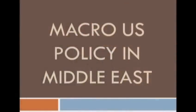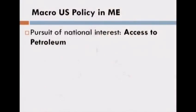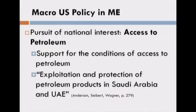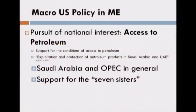Let's introduce some macro policy in the Middle East relative to the United States. Relative to US foreign policy and the pursuit of national interest — how about access to petroleum? That's high on the list. Maintaining and preserving access to petroleum regardless of the kind of government that's in place. Anderson, Siebert, and Wagner say, quote, 'exploitation and protection of petroleum products in Saudi Arabia and United Arab Emirates is primary on the United States national interest list.' Access to petroleum is fundamental to US interest.